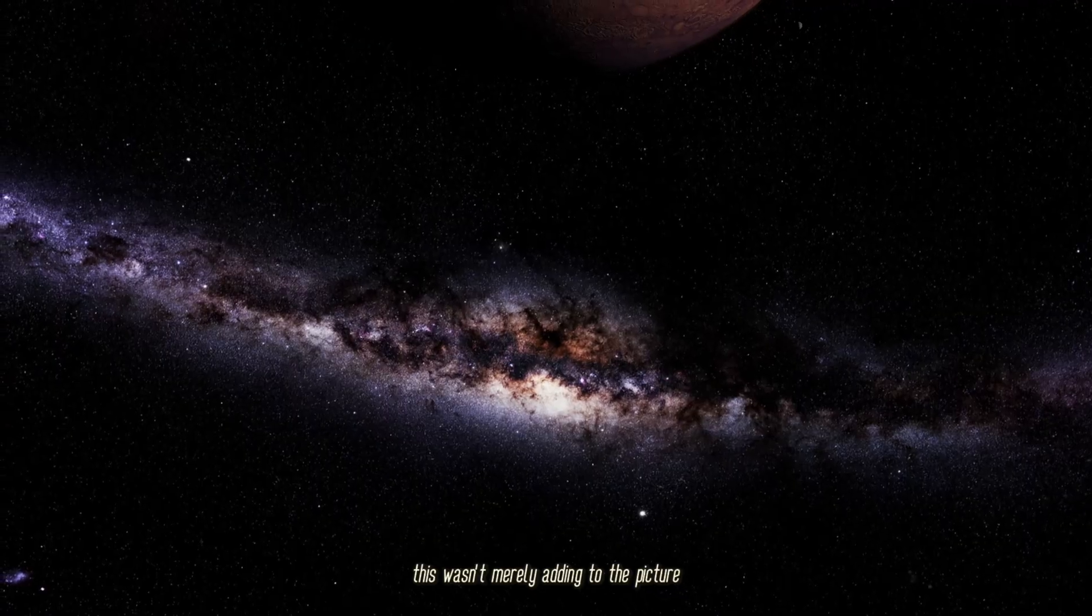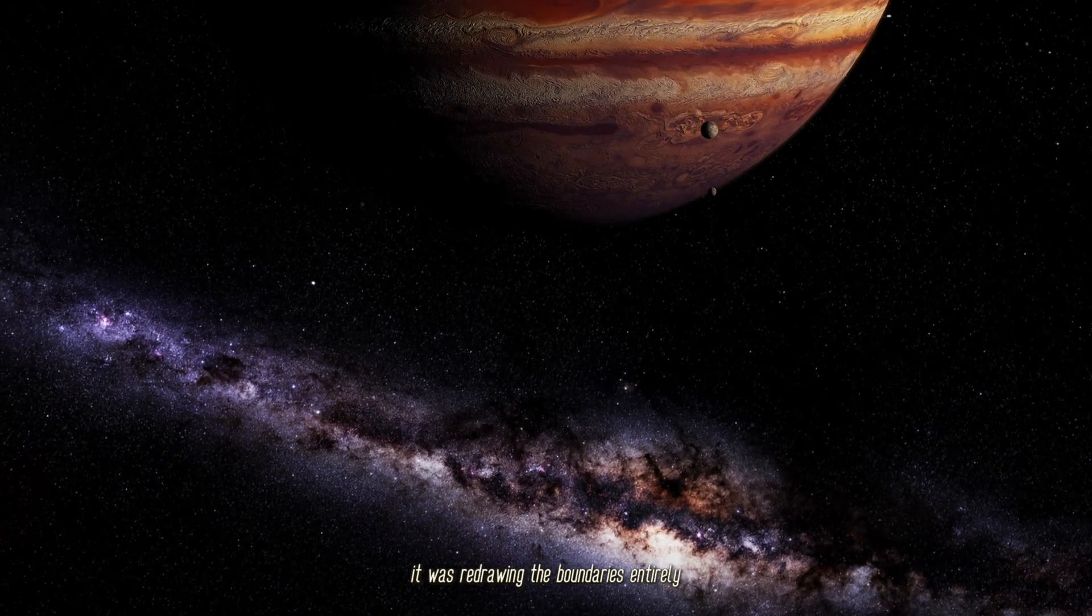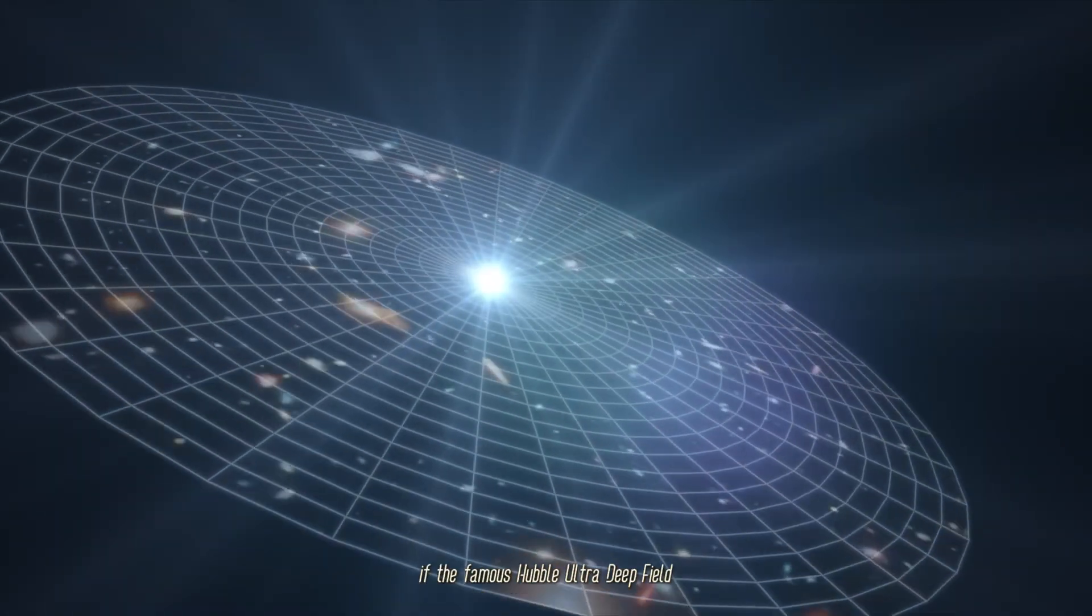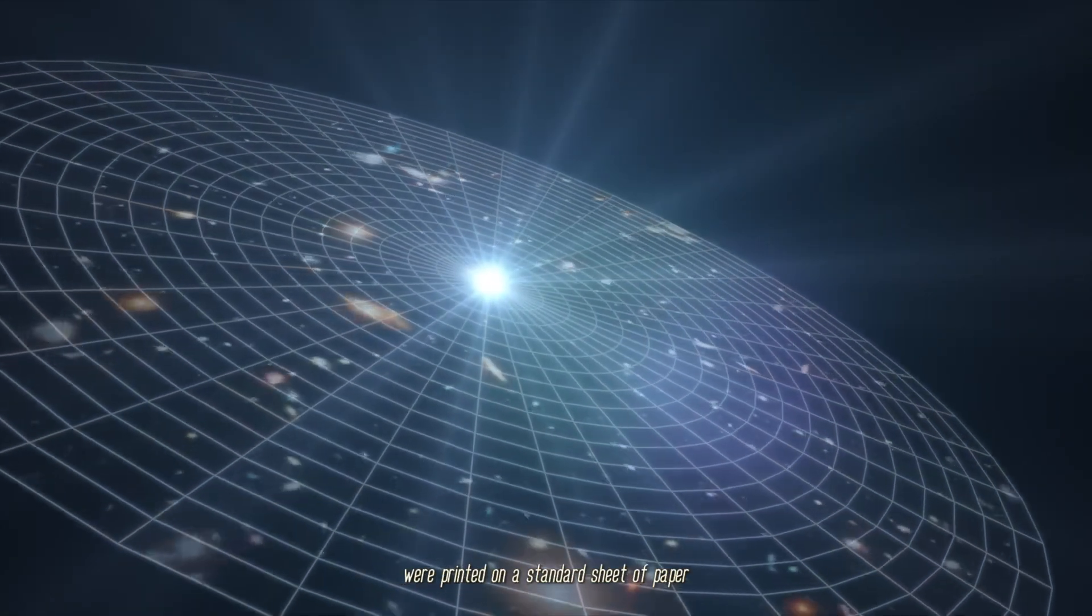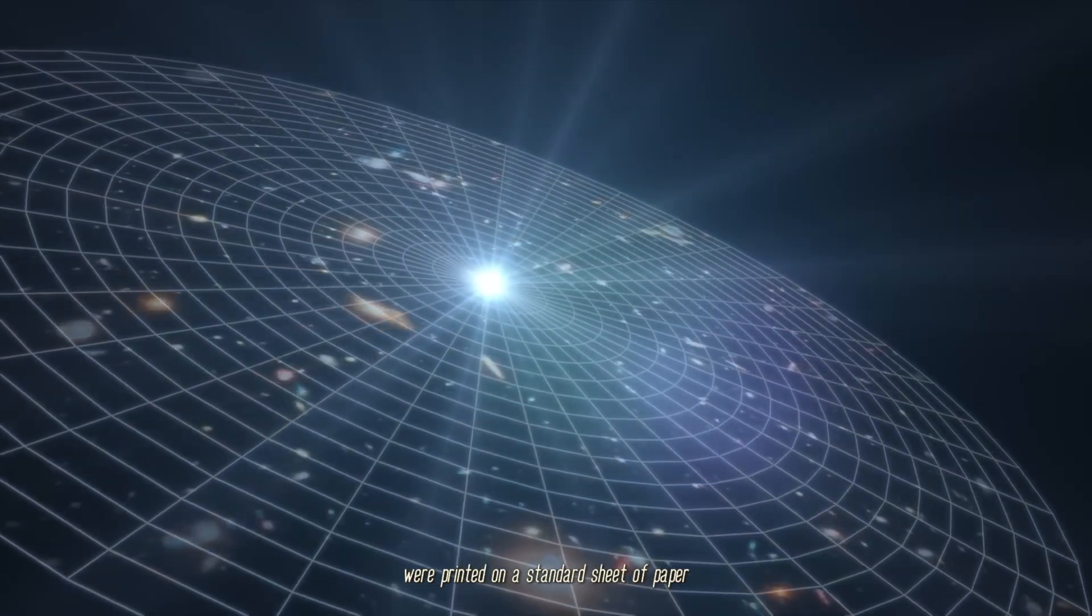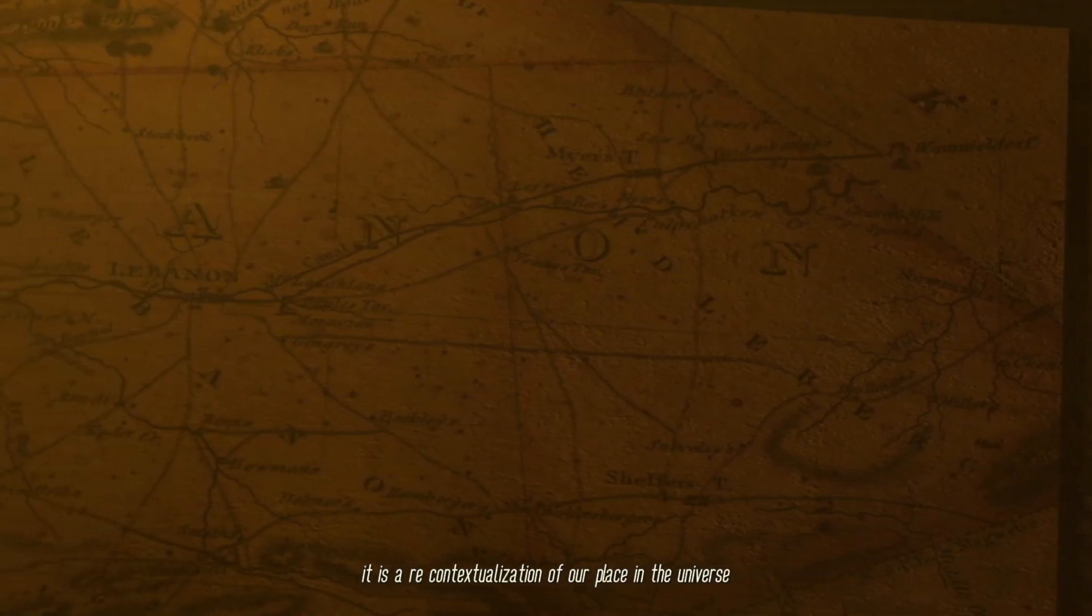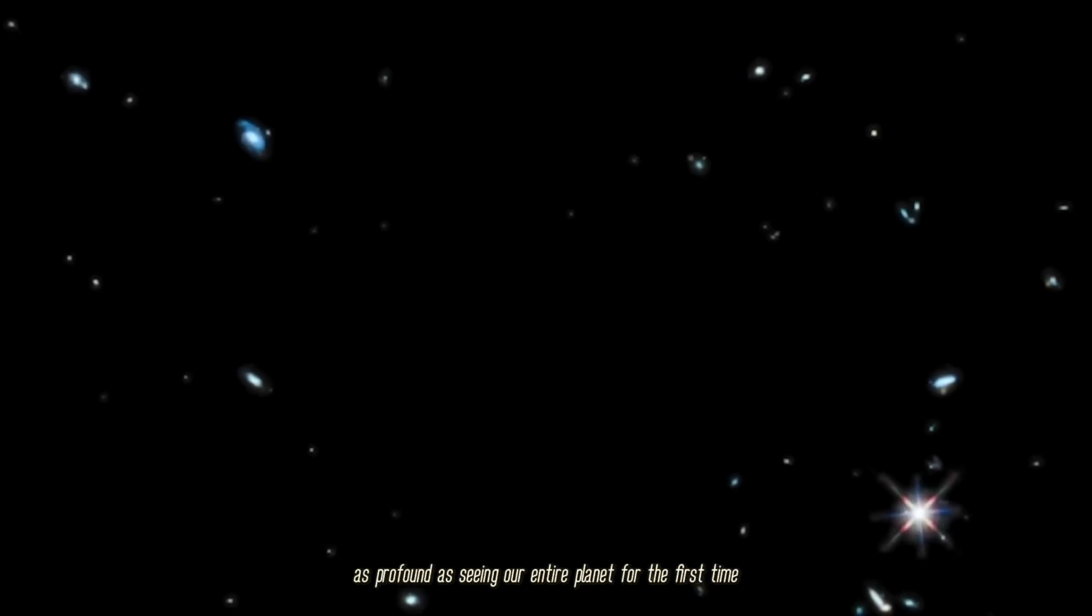To put the scale in perspective, if the famous Hubble Ultra Deep Field were printed on a standard sheet of paper, the new JWST map from COSMOS-Web at the same resolution would be a mural stretching over 13 feet on each side. It is a recontextualization of our place in the universe as profound as seeing our entire planet for the first time after only ever knowing a single city.